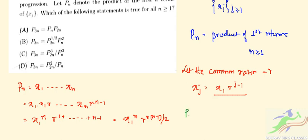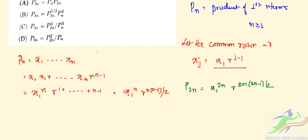Next, what will be P(2n)? From the formula, P(2n) = X_1^(2n) · R^(2n(2n-1)/2). And what will be P(3n)? P(3n) = X_1^(3n) · R^(3n(3n-1)/2).